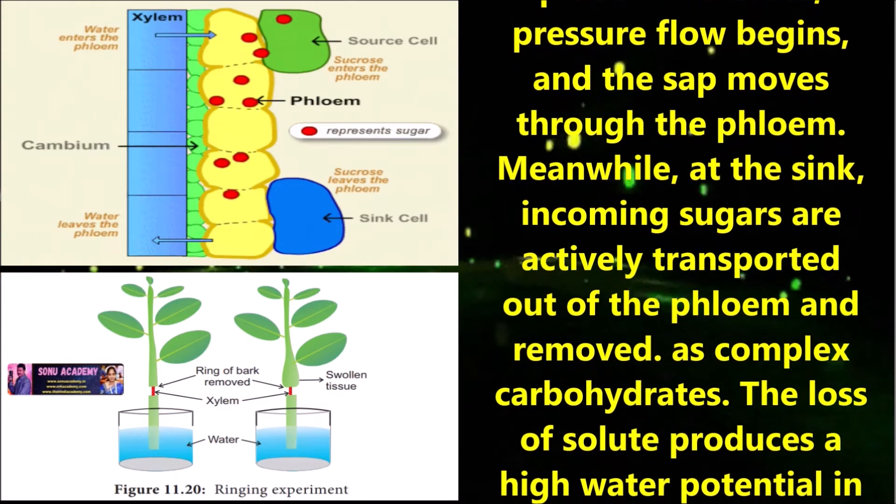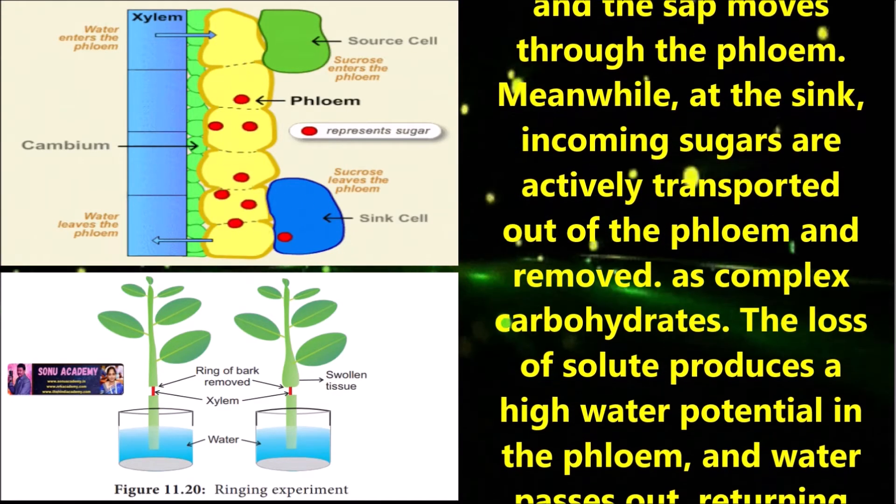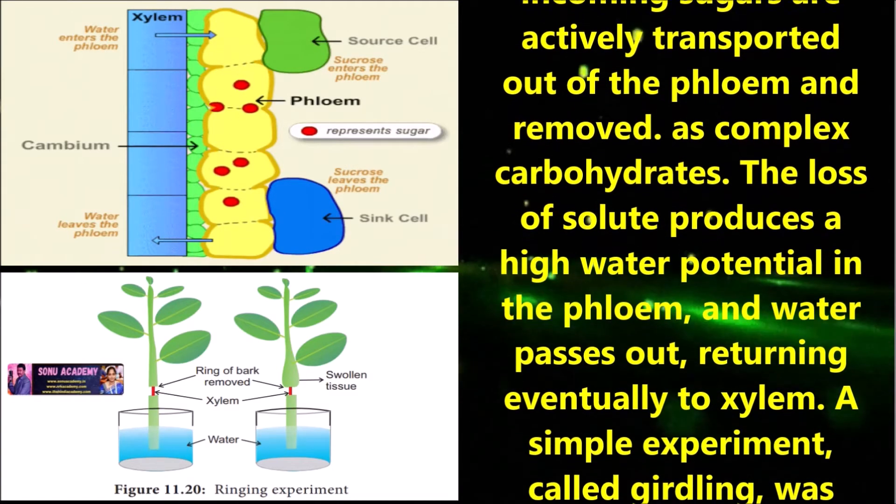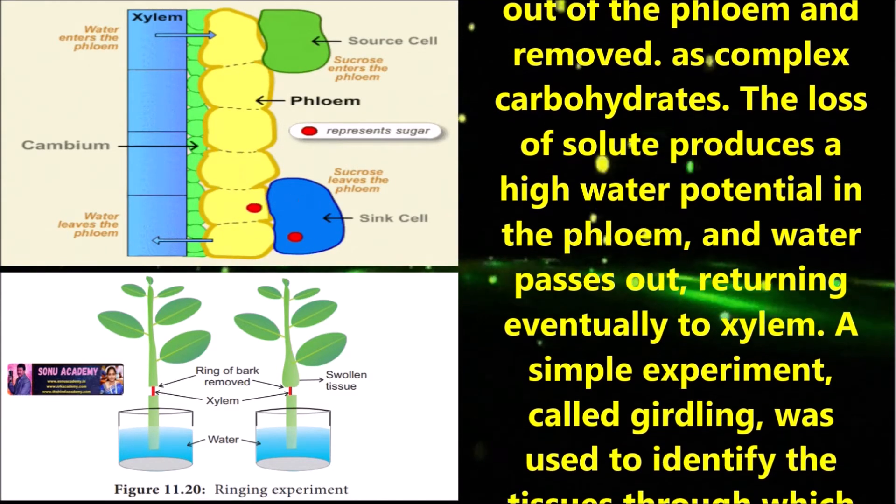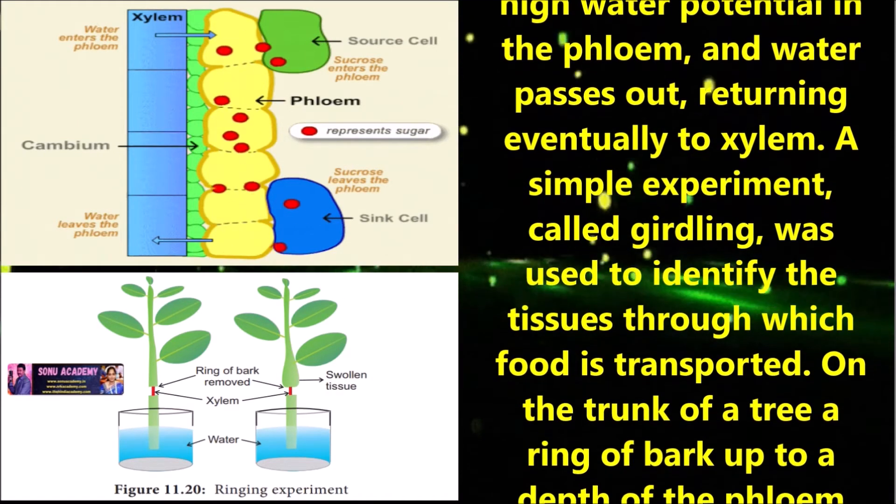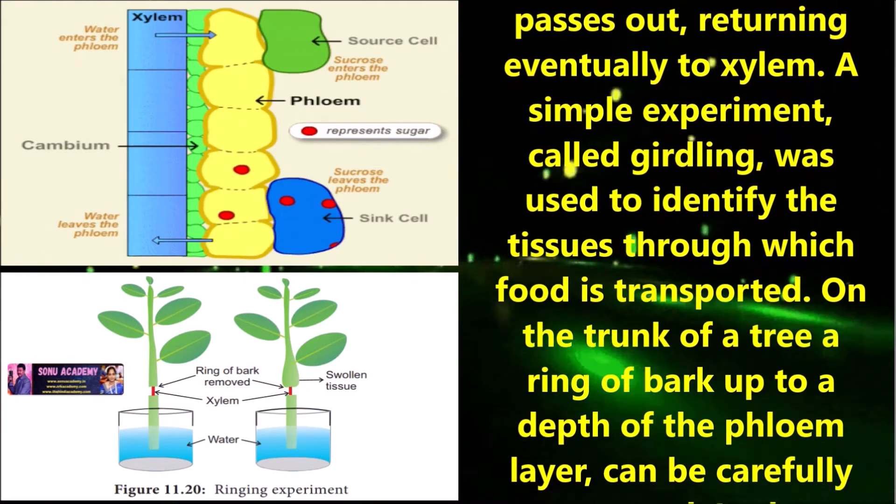As hydrostatic pressure in the sieve tube of phloem increases, the pressure flow begins and the sap moves through the phloem. Meanwhile, at the sink, incoming sugars are actively transported out of the phloem and removed as complex carbohydrates. The loss of solute produces a high water potential in the phloem and water passes out, returning eventually to the xylem.